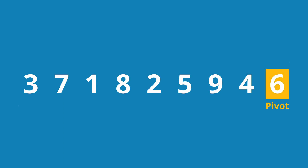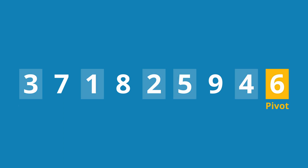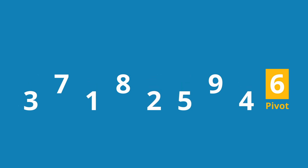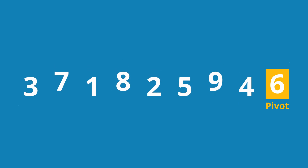Small numbers are now all numbers smaller than 6, and large numbers are those greater than or equal to 6. To divide the numbers into two partitions, we proceed as follows: starting from the left, we look for the first element greater than or equal to 6.